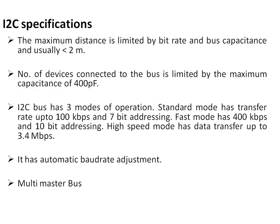The I2C bus specifications: maximum distance is limited by the bit rate and bus capacitance, usually less than two meters. The number of devices connected to the bus is limited by the maximum bus capacitance of 400 pF as defined in the I2C standard. I2C has three modes of operation: standard mode supporting 100 kbps with 7-bit addressing, fast mode supporting 400 kbps with 10-bit addressing.